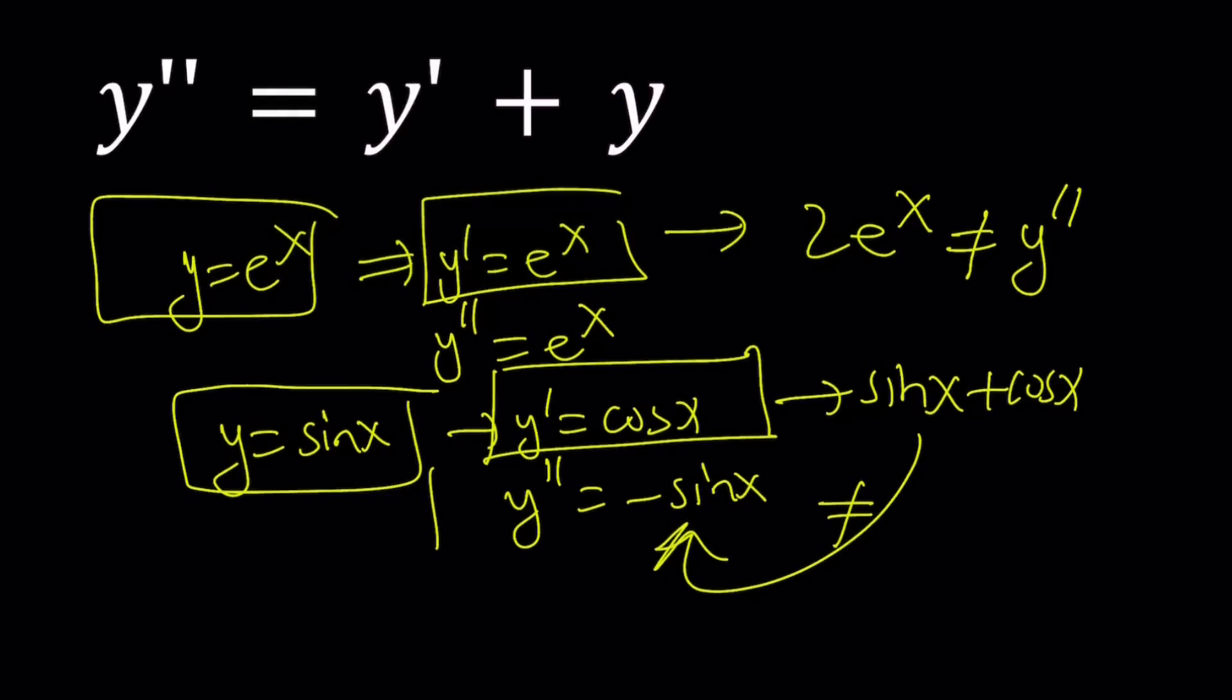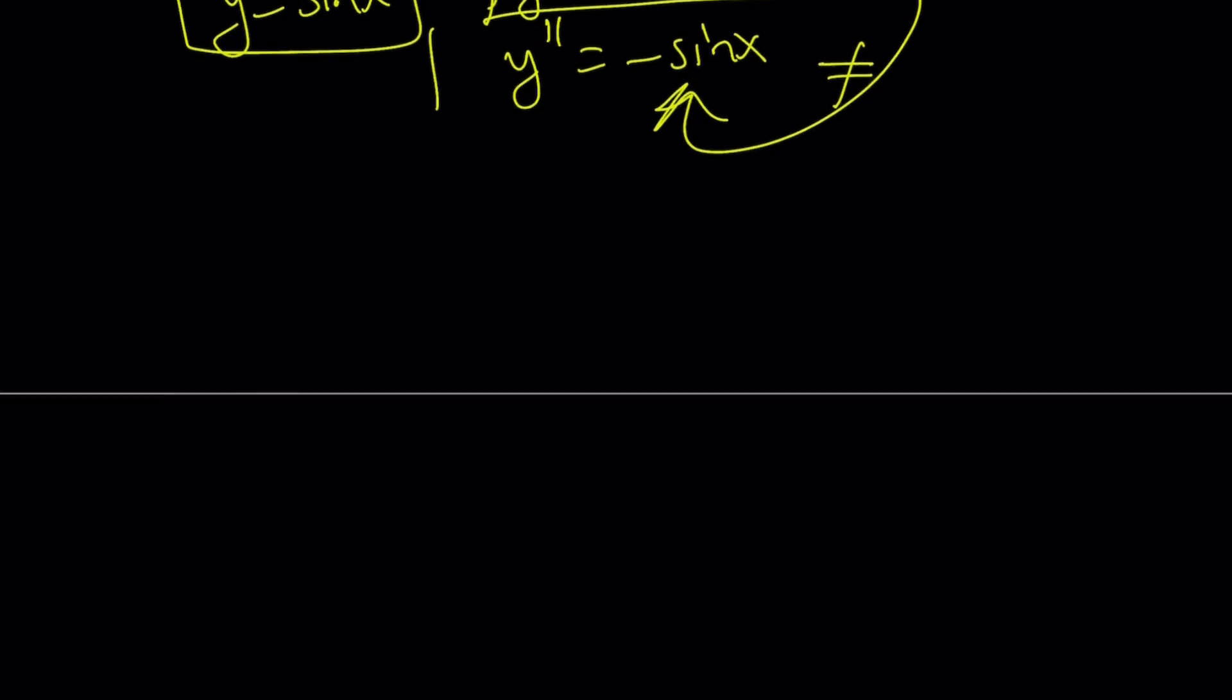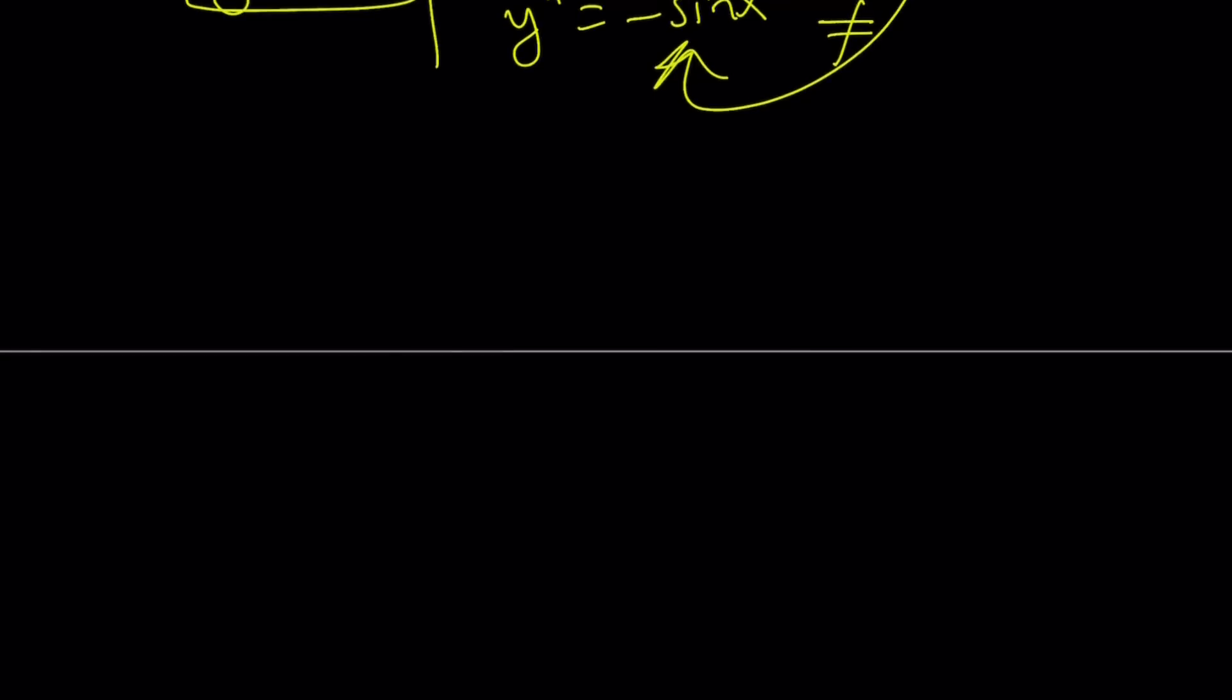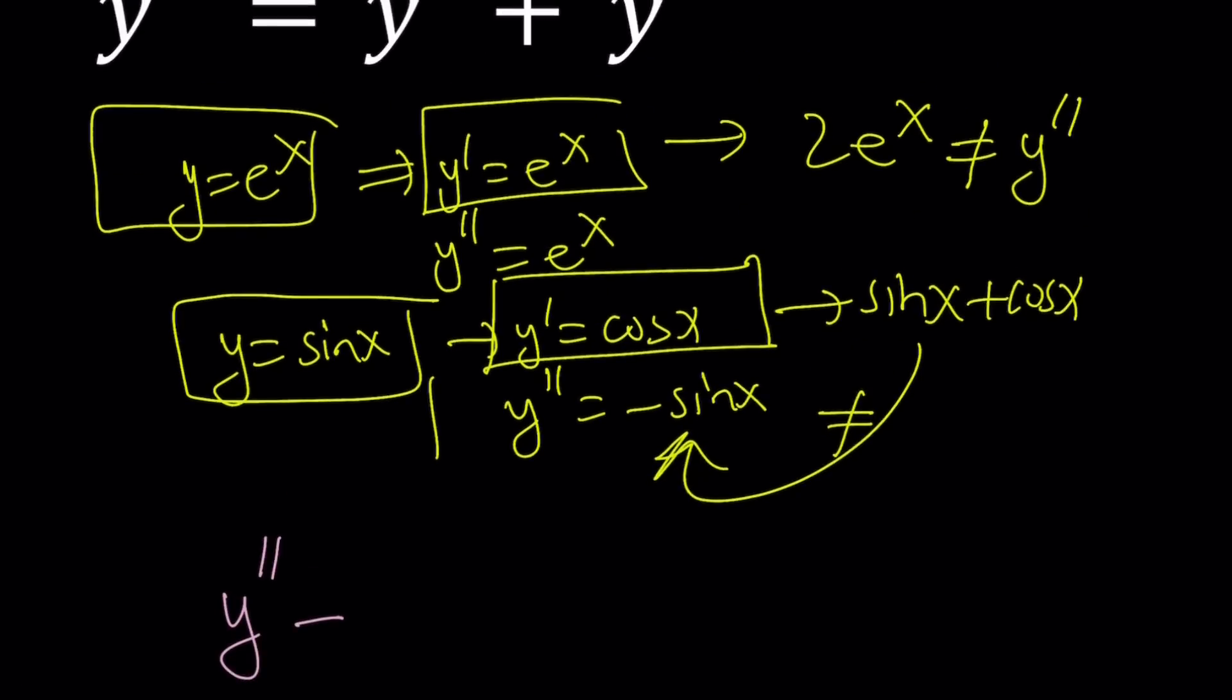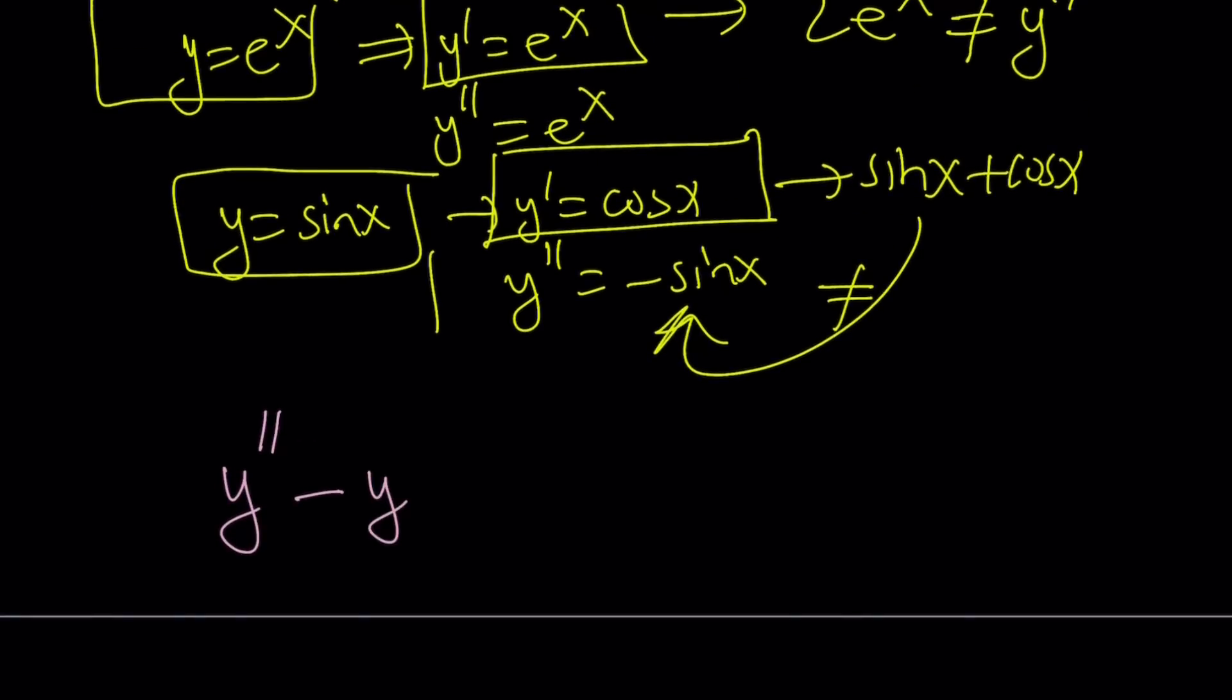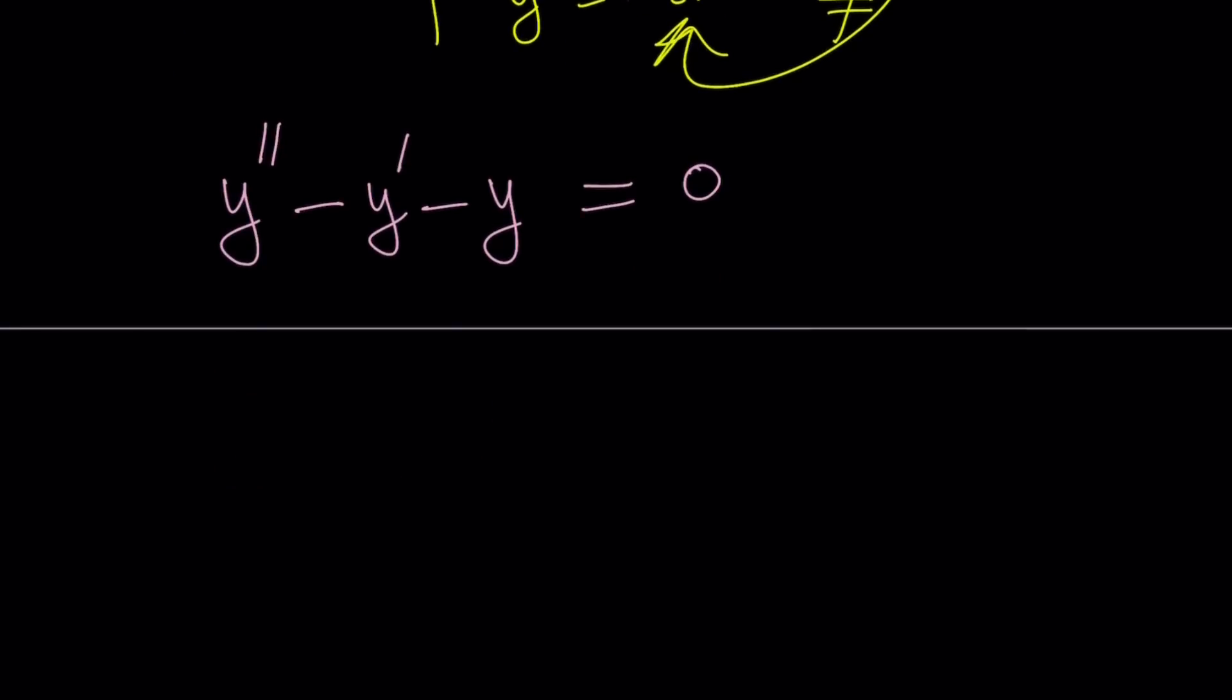And here's what we're going to do. We're going to put everything on the same side. And I'm going to show you a method which uses differential operators, or some people call it differentiation operators. So we put everything on the same side. And now we're going to think about it this way. So a differentiation operator was applied to y, first the second derivative, and then the first, and then the function itself.